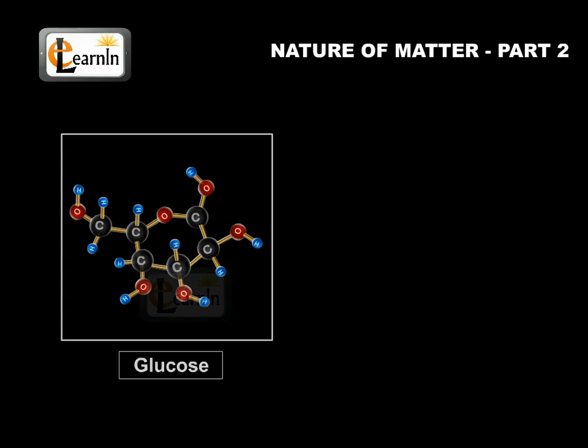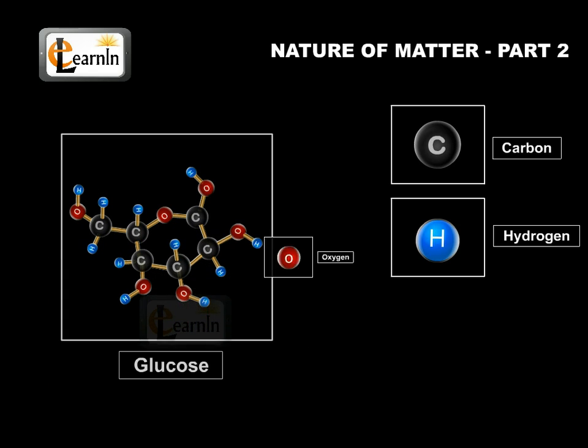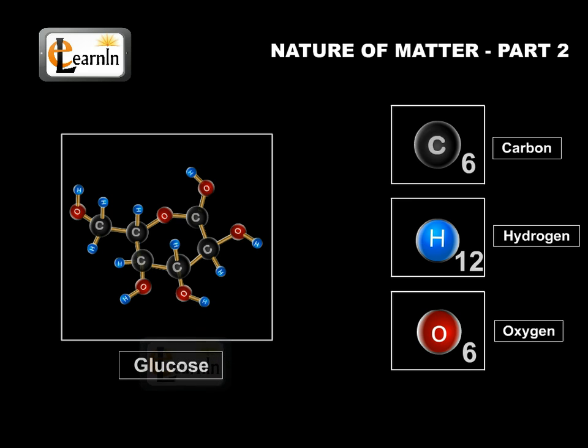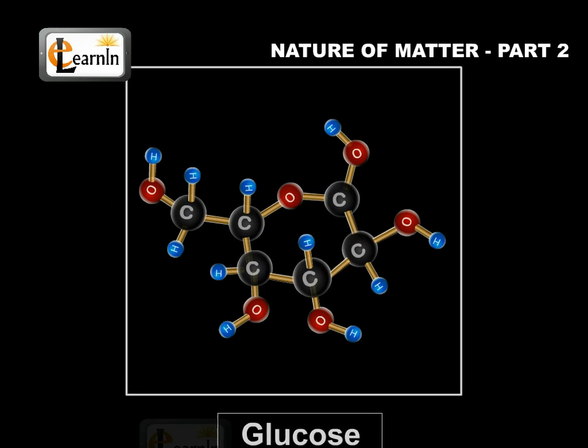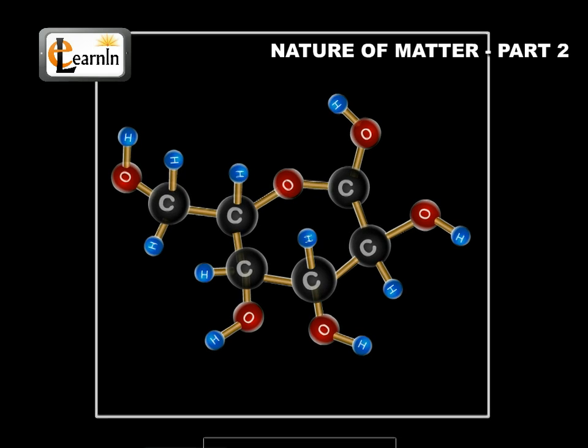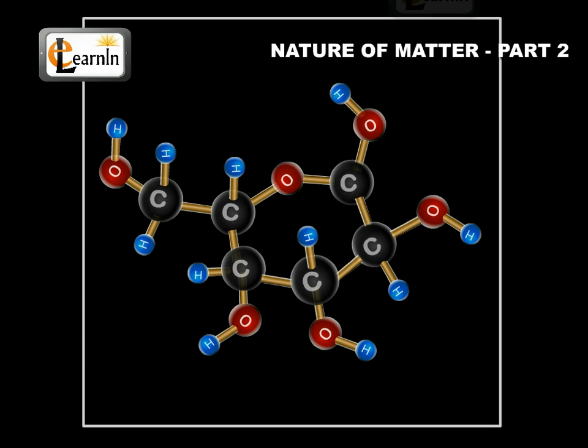Glucose contains carbon, hydrogen, and oxygen in a fixed ratio and thus, like all other pure substances, has a fixed composition. Also, the constituents of pure substances cannot be separated by simple physical methods.